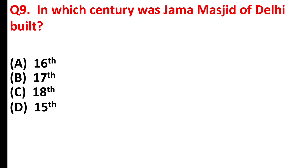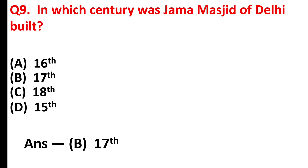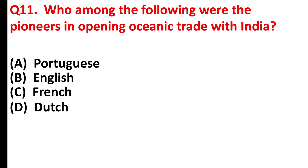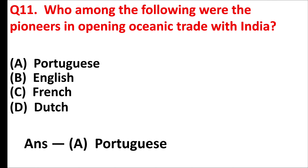In which century was Jama Masjid of Delhi built? Answer is option B: seventeenth. In which year did the Portuguese capture Goa from Bijapur? Answer is option C: fifteen hundred and ten (1510). Who among the following were the pioneers in opening oceanic trade with India? Answer is option A: Portuguese.